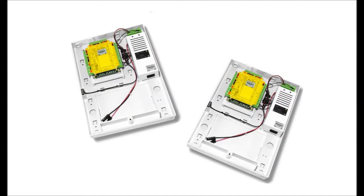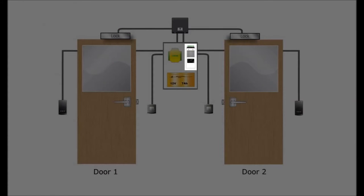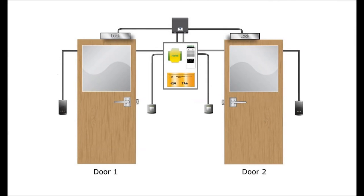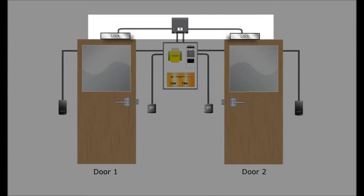The Net 2 ACU power can be used provided it has sufficient capacity for the interlock and lock as well as the ACU and its readers. Net 2 will determine the access when a token is presented, but the interlock will only open the relay provided the two doors are in the correct state.